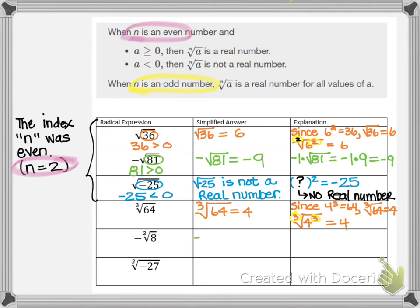Let's take a look at the opposite of the cube root of 8. This equals negative 2 because the negative on the outside is like negative 1 being multiplied by the cube root of 8, so negative 1 times 2 equals negative 2. The cube root of 8 is 2 because 2 times 2 times 2 equals 8 — three factors of 2 equal 8.